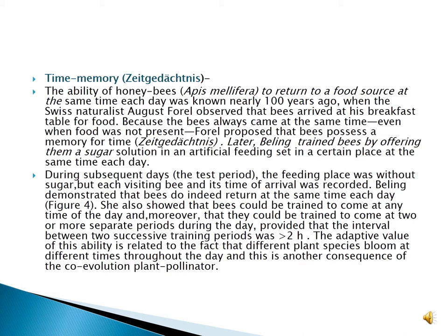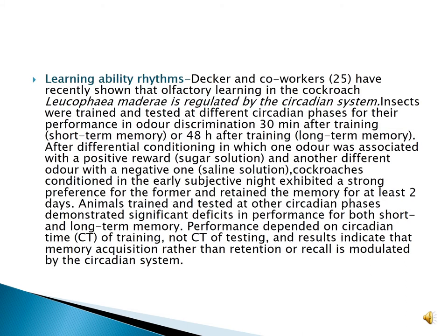She also showed that bees could be trained to come at any time of the day, and moreover that they could be trained to come at two or more separate periods during the day, provided that the interval between two successive training periods was less than two hours. The adaptive value of this ability is related to the fact that different plant species bloom at different times throughout the day — another consequence of co-evolution between plants and pollinators.